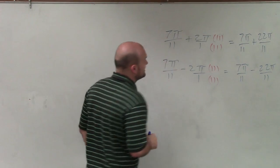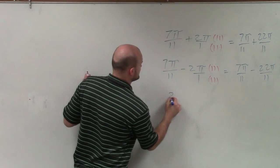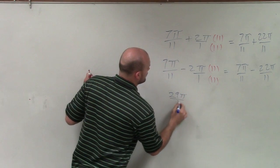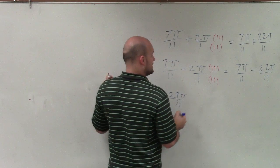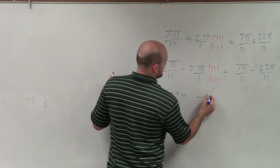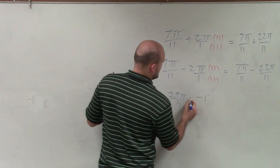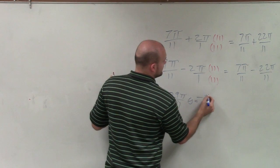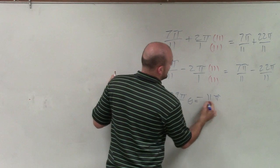Therefore, going to simplify these, the two answers I'll have is 29 pi over 11 and negative, so theta equals, theta equals negative 15 pi over 11.